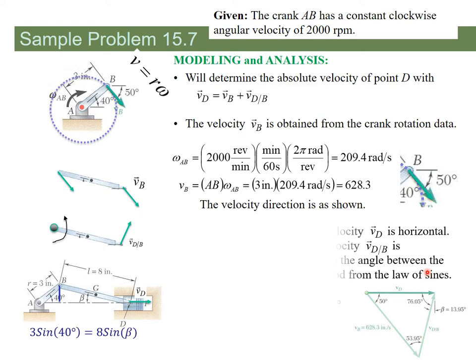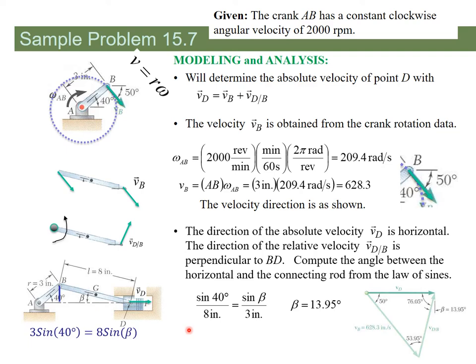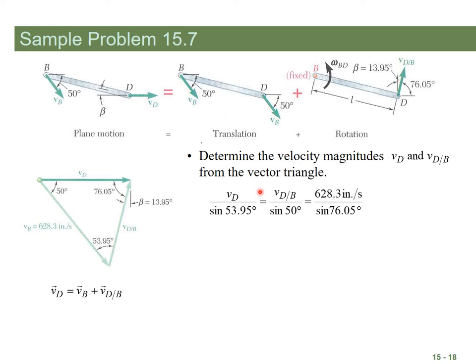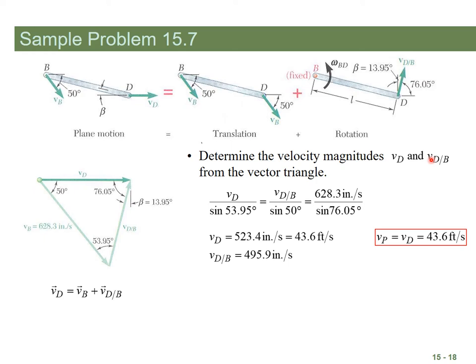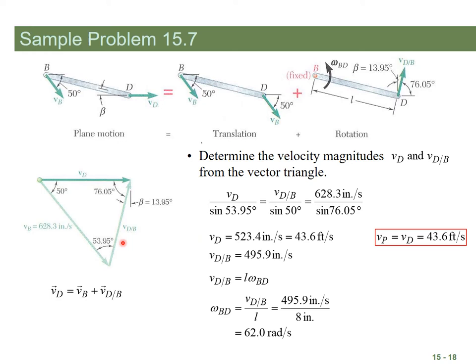Once you know one side of the triangle and all the angles, use law of sines to find the rest. Draw the vector triangle head to tail: VD equals VB plus the rotational relative velocity. Without these pictures, it's very hard to find the directions. Once you have the velocity of D, V equals r omega gives you omega of the connecting rod.